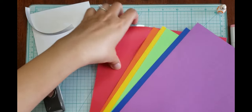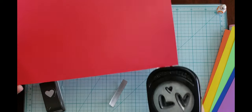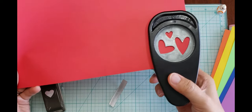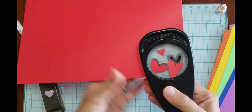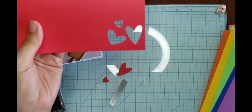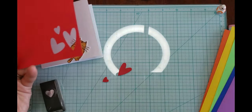This punch is the Stampin Up heart punch called Heart to Heart. They don't make their punches in this style anymore. They have the gray ones, which are collapsible, like the small heart punch I have here.